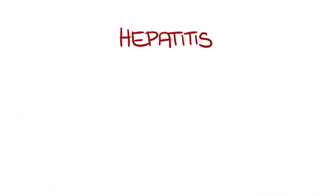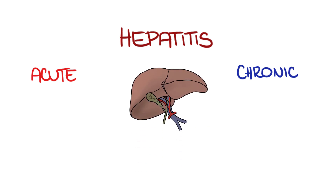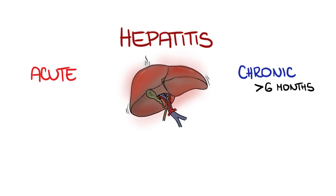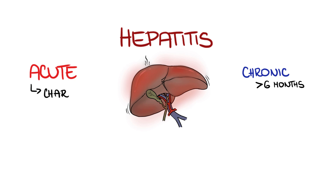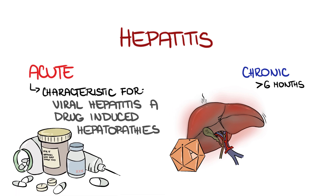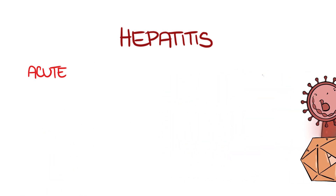Hepatitis can be classified as acute and chronic. From a clinical point of view, chronic hepatitis is defined as inflammation lasting for at least 6 months. There is a difference at the morphological level too. Morphology of acute hepatitis is characteristic for viral hepatitis A and some drug-induced hepatopathies. In some cases, viral hepatitis B can manifest as both acute and chronic hepatitis.